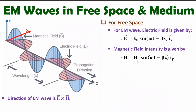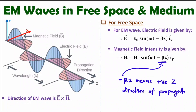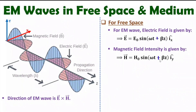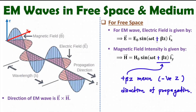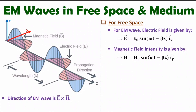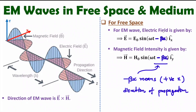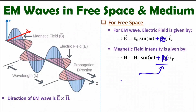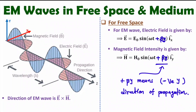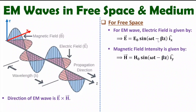H₀ is the maximum magnitude of magnetic field intensity. Omega is angular frequency and beta is 2π/λ. The minus Z term means direction of propagation is towards the positive Z direction. If the direction of propagation is towards negative Z, there will be a plus sign. Also note: if it is minus βx, propagation is towards positive X direction; if it is plus βy, propagation is towards negative Y direction. That is how direction of propagation is understood from the wave equation in free space.